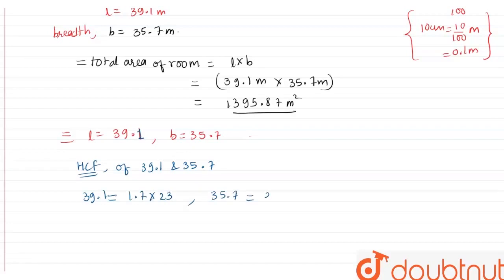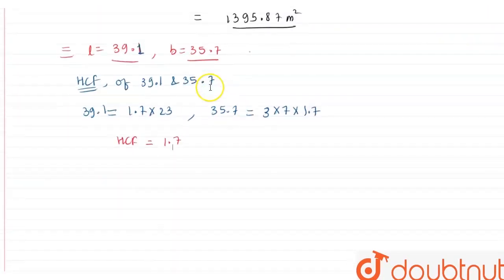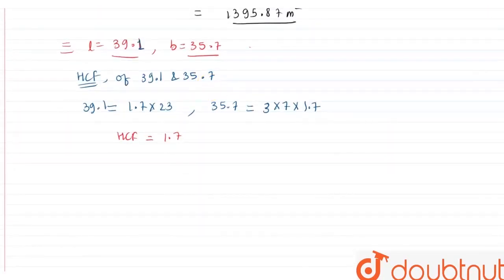So 39.1 factorize them as 1.7 times 23, and 35.7 factorize them as 3 times 7 times 1.7, all right? So by this it becomes the HCF of these two numbers will be 1.7. All right, so our largest tile that can be used will be largest tile or the square tile we can say.